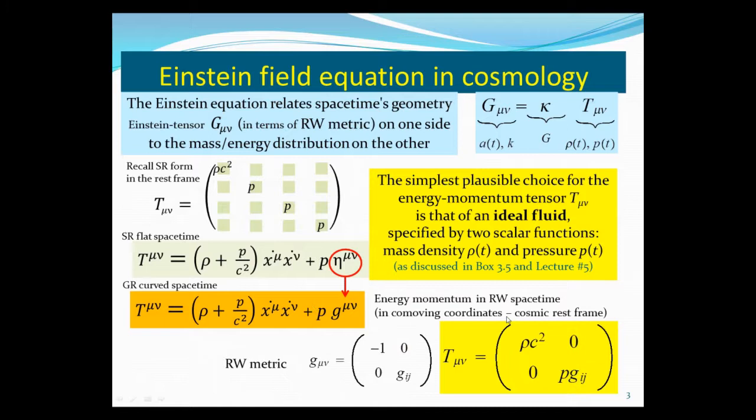And the Robertson-Walker metric, remember, has the form g_μν. Here's the inverse metric, it's the same. It's minus 1, it's block diagonal. This is 3 by 3 g_ij. And if you plug that into here, then this equation in the comoving frame is ρc² and instead of just simple PPP, it's P times the Robertson-Walker g_ij.